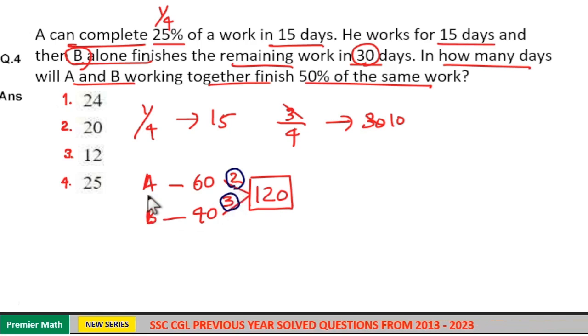That is work finished by A and B in 1 day is 2 plus 3, which is 5 units. Now we need 50% of the work. So 50% of work is equal to 60 units, half of 120.